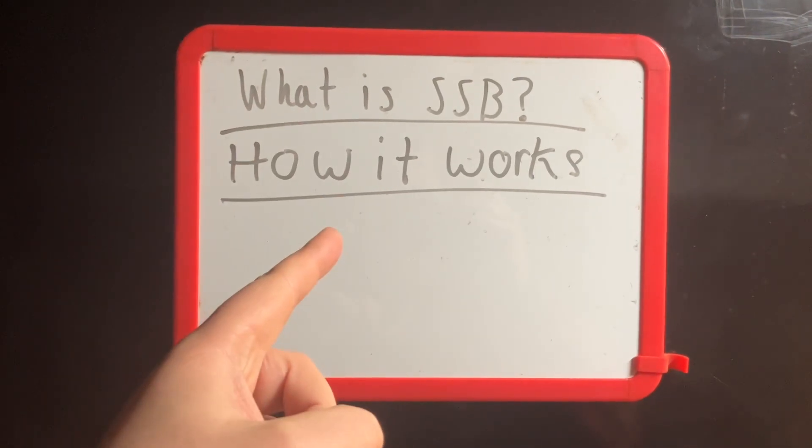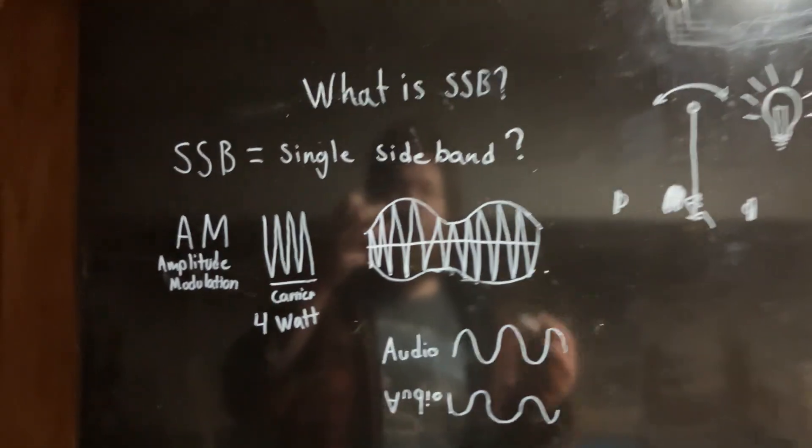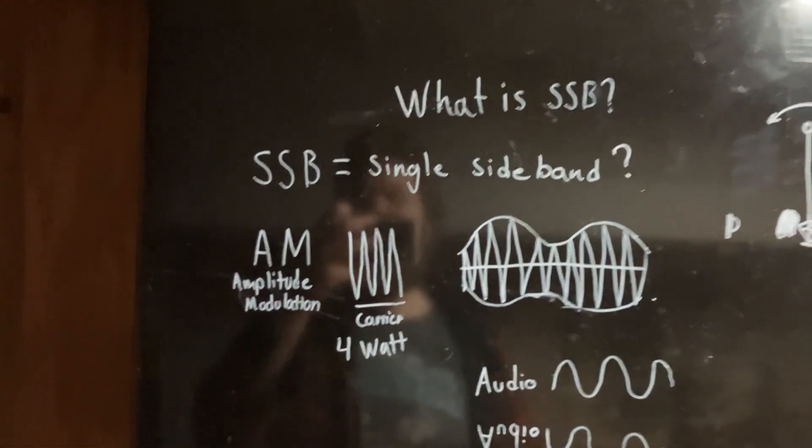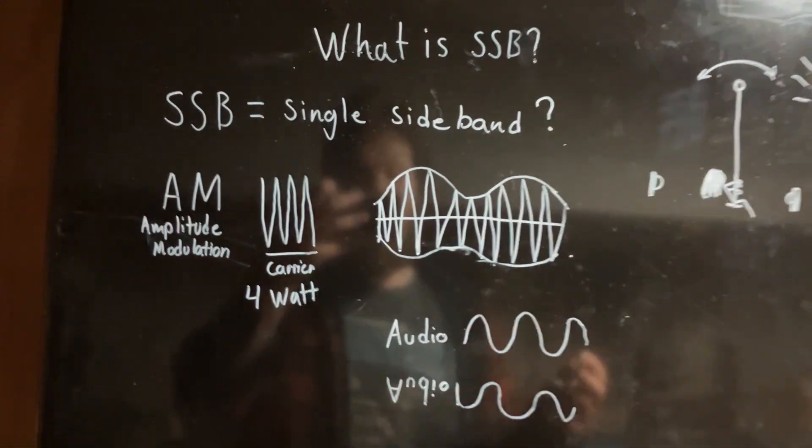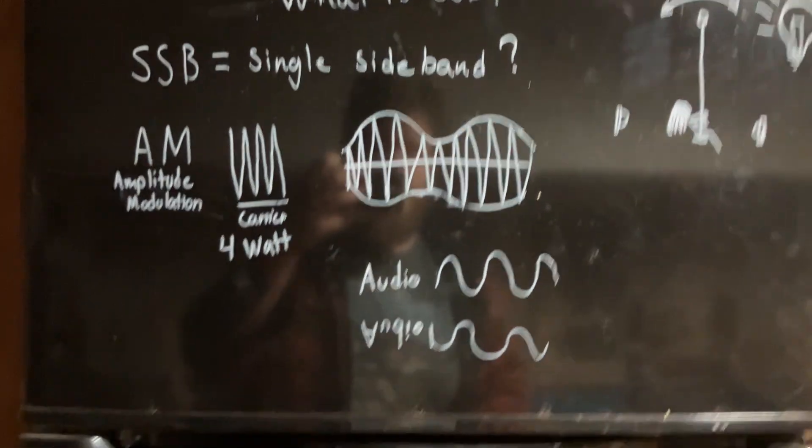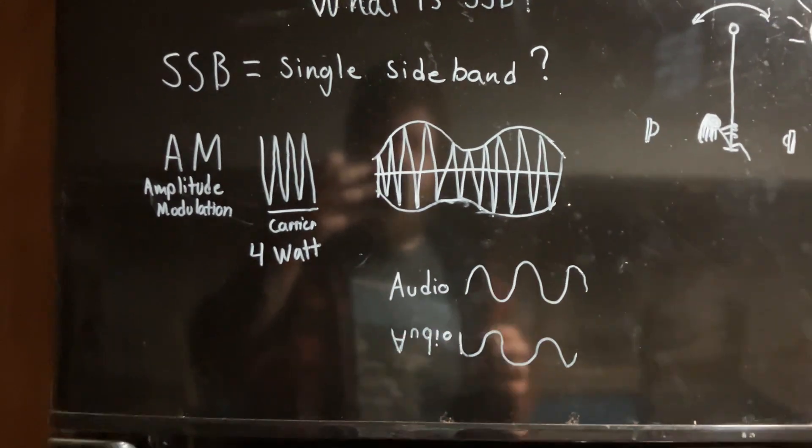So what is SSB anyway? SSB stands for single sideband, sometimes quoted as single sideband suppressed carrier. But what is a sideband? Well, in order to figure that out we have to look at what AM modulation is.